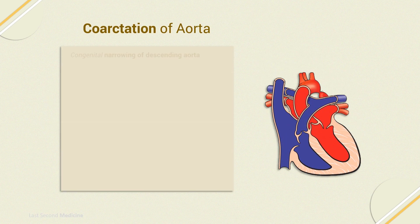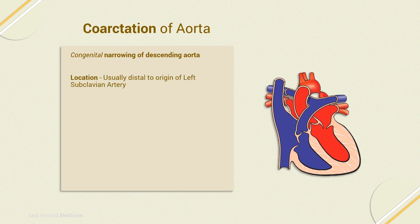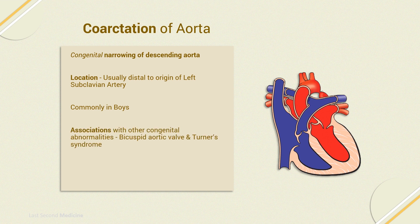Coarctation of the aorta is the congenital narrowing of the descending aorta. The narrowing usually occurs just distal to the origin of the left subclavian artery. It is more commonly found in boys, and may be associated with other congenital abnormalities like bicuspid aortic valve and Turner's syndrome.